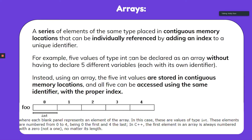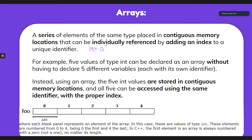For example, I have five values of type int. Integers are just your numbers like one, two, three, four. So I have five values and they can be declared as an array without having to declare five different variables. Instead of writing out int a, int b, int c, and so on, we can showcase all of these variables together into one contiguous array that stores all these values together.